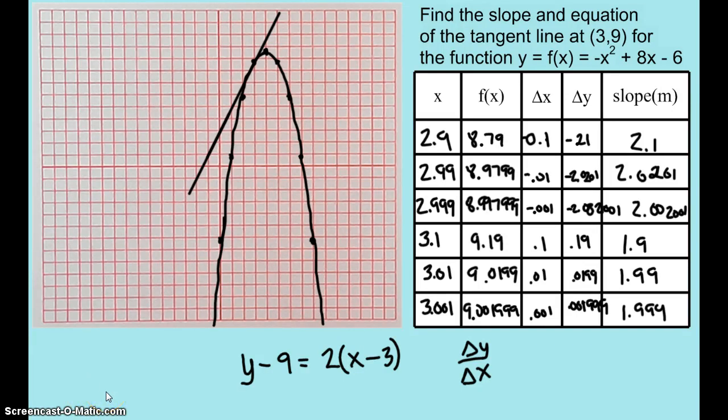The equation of the line, y minus 9 equals 2 times the expression x minus 3. I'm not so worried about you putting that in slope intercept form, so just go ahead and leave your answer just like that.